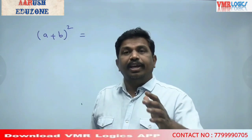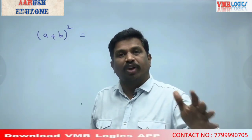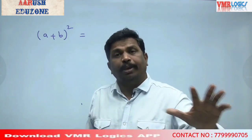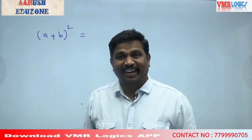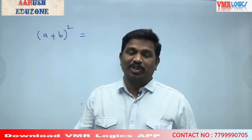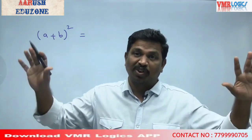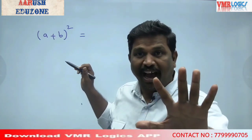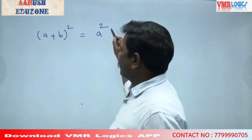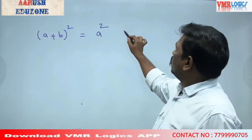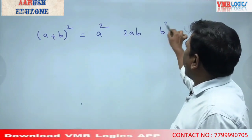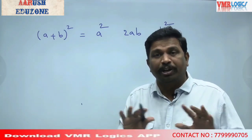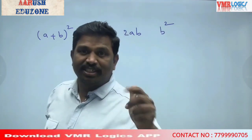The A plus B whole square formula gives us: A square plus 2AB plus B square. This is the VMA formula.